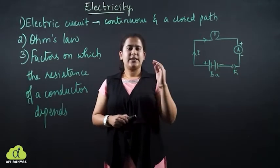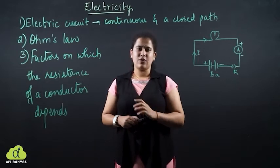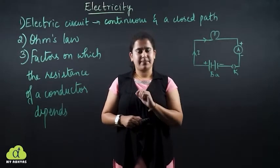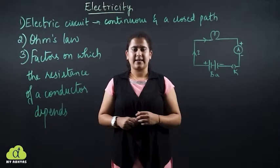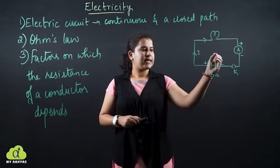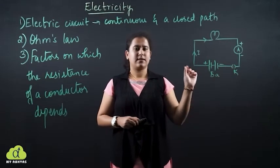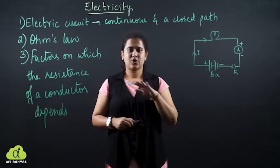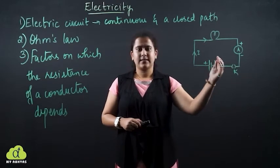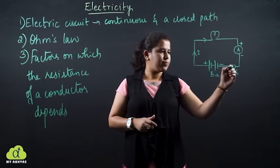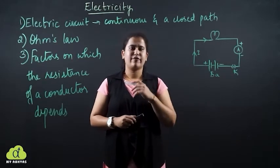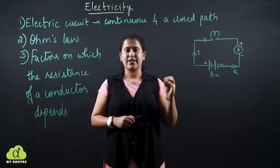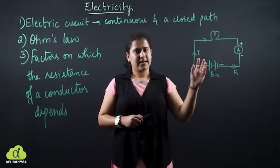The plug key works similarly to a switch in your home. For example, if you want to switch on the fan, you just switch on the switch and the fan turns on automatically. Similarly, in this circuit, if you remove the key — that is, remove this point — the current stops flowing because there is no connection between the two terminals. If you put the key back, the current starts flowing again because it is connected. This is how an ideal electric circuit is taken.